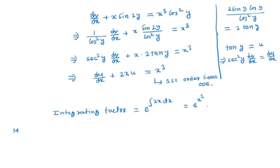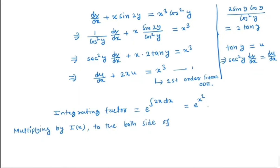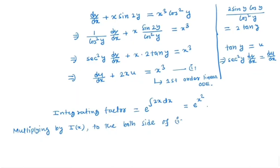Now multiplying by integrating factor to both sides of equation 1, we get d/dx of (u times e^(x²)) which is nothing but x³ e^(x²).